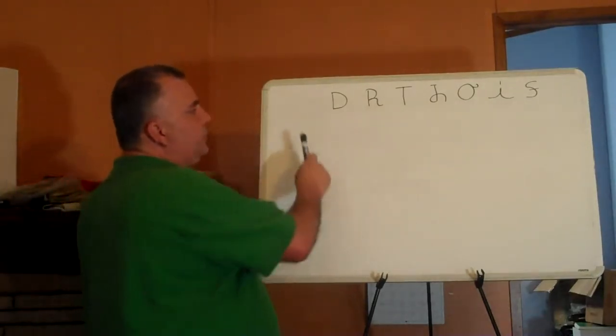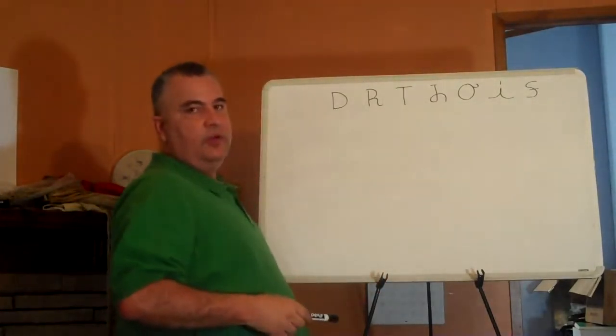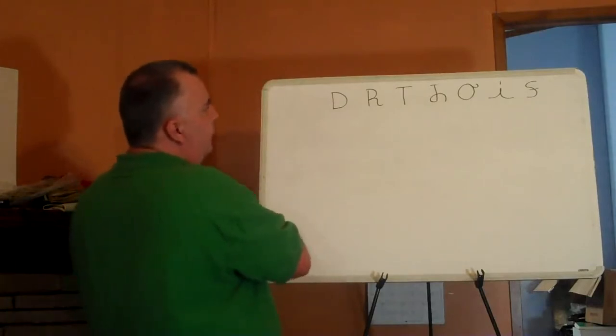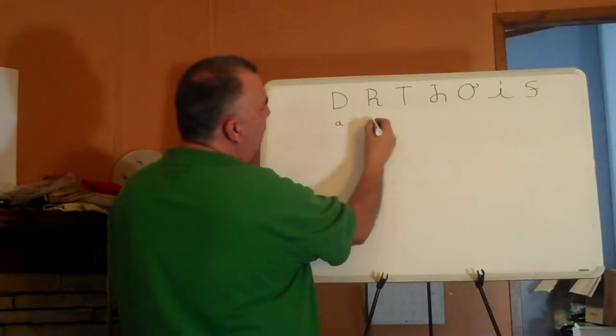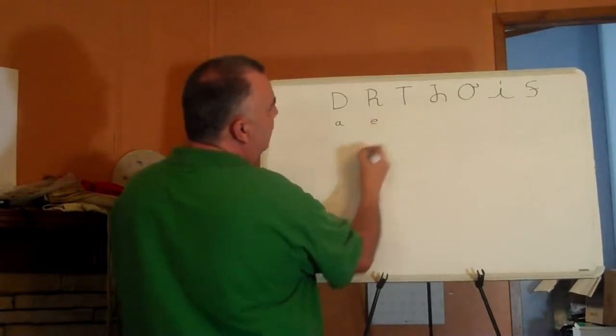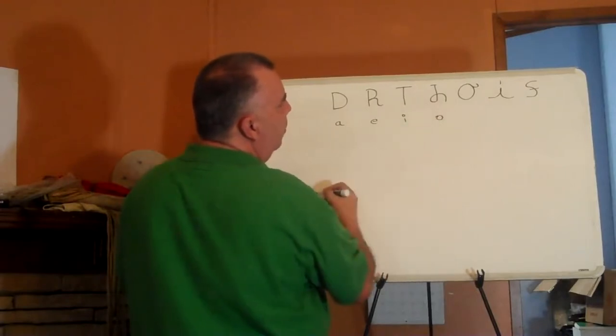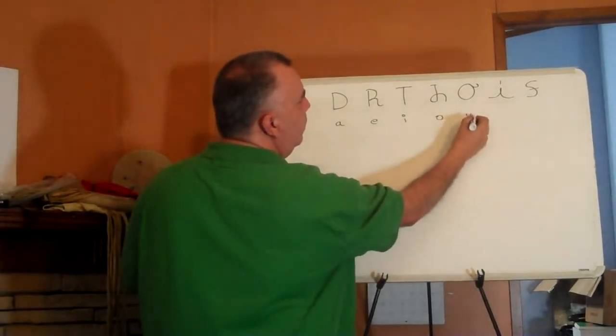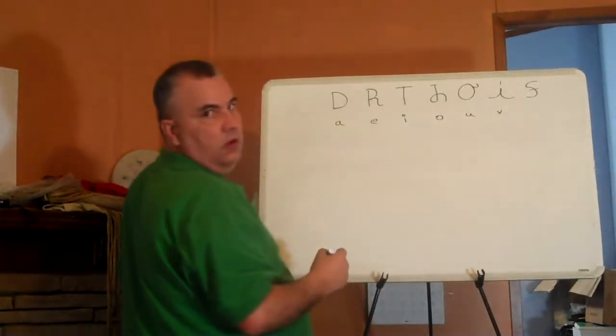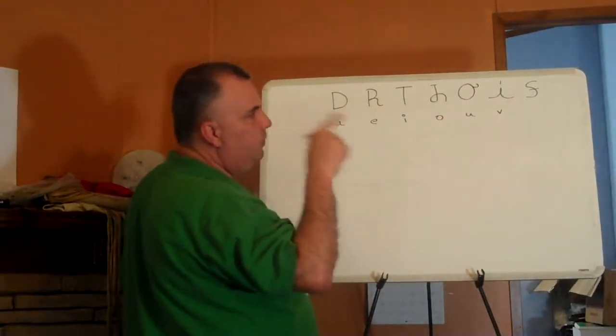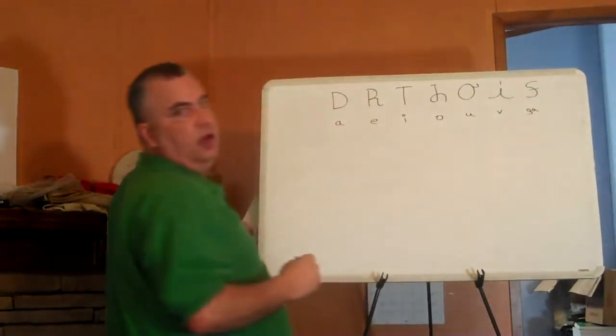So the first thing you're going to notice is that each one of these corresponds to the six special vowels. So you have, in English writing, a, a, e, i, o, oo, uh. Remember the uh goes through the nose. And then we have a combination called ga.